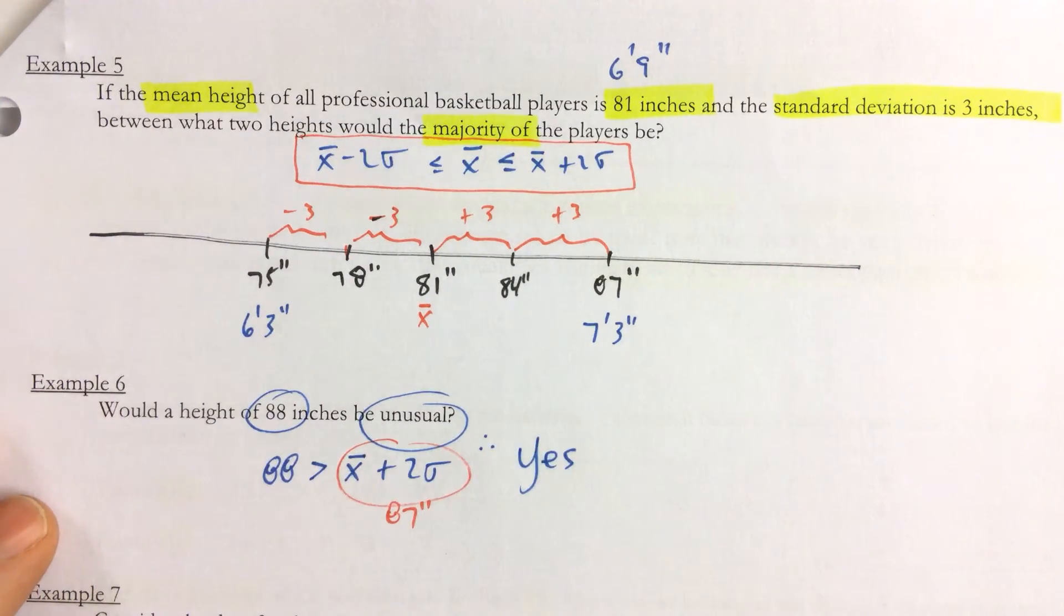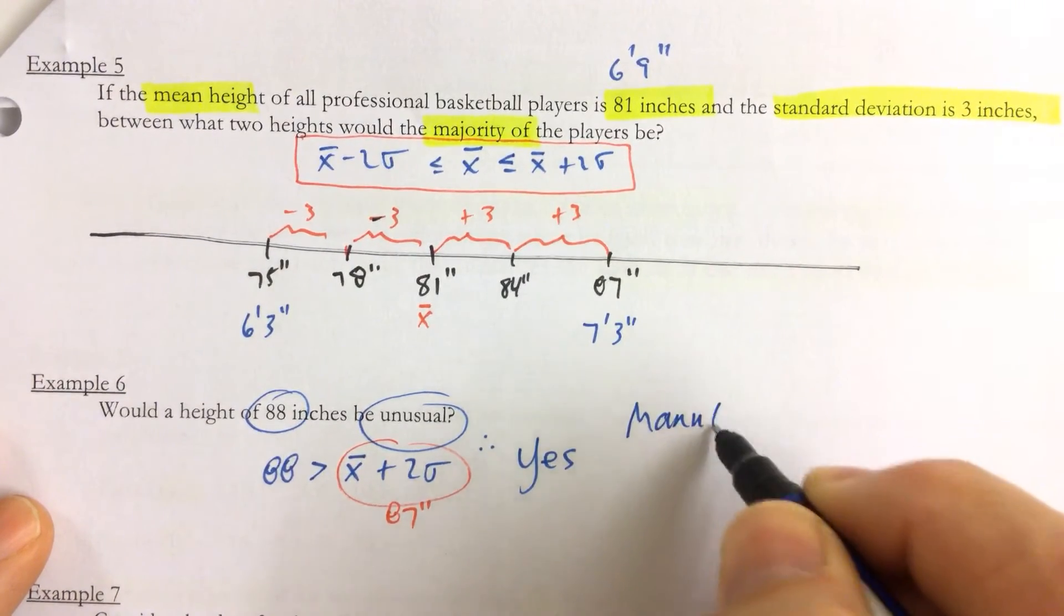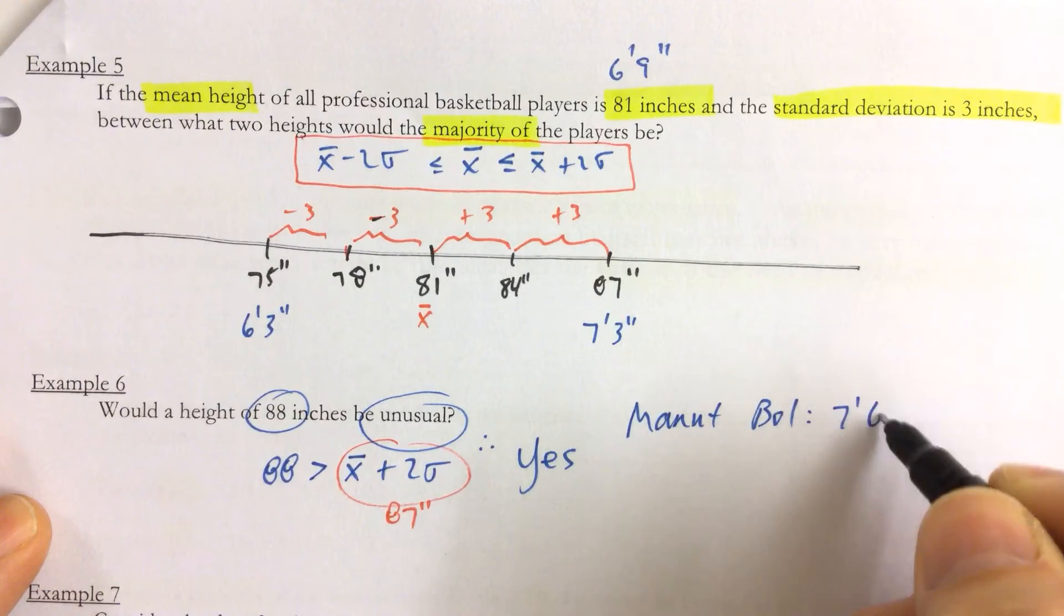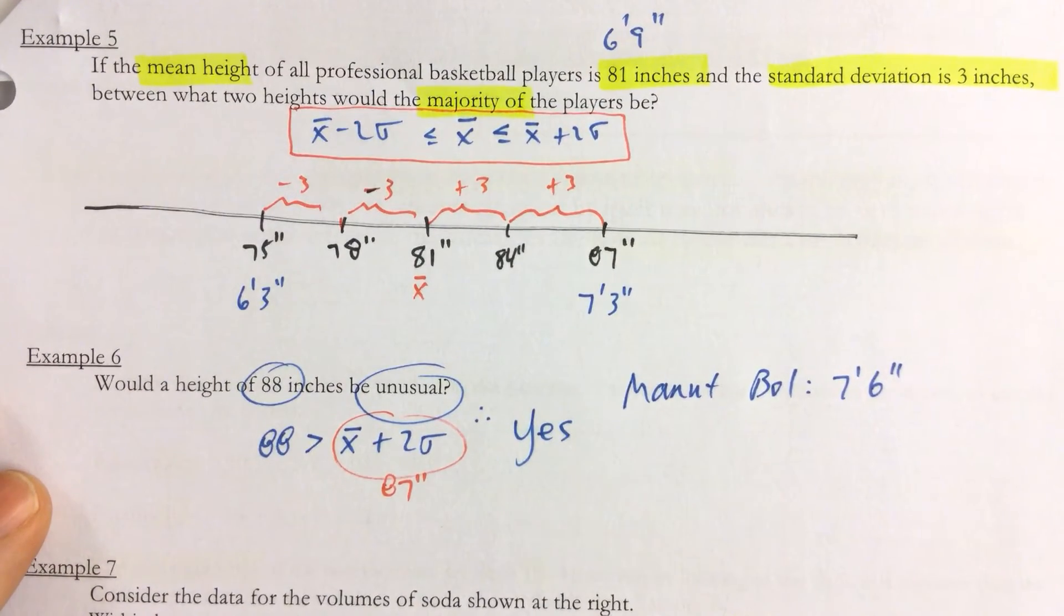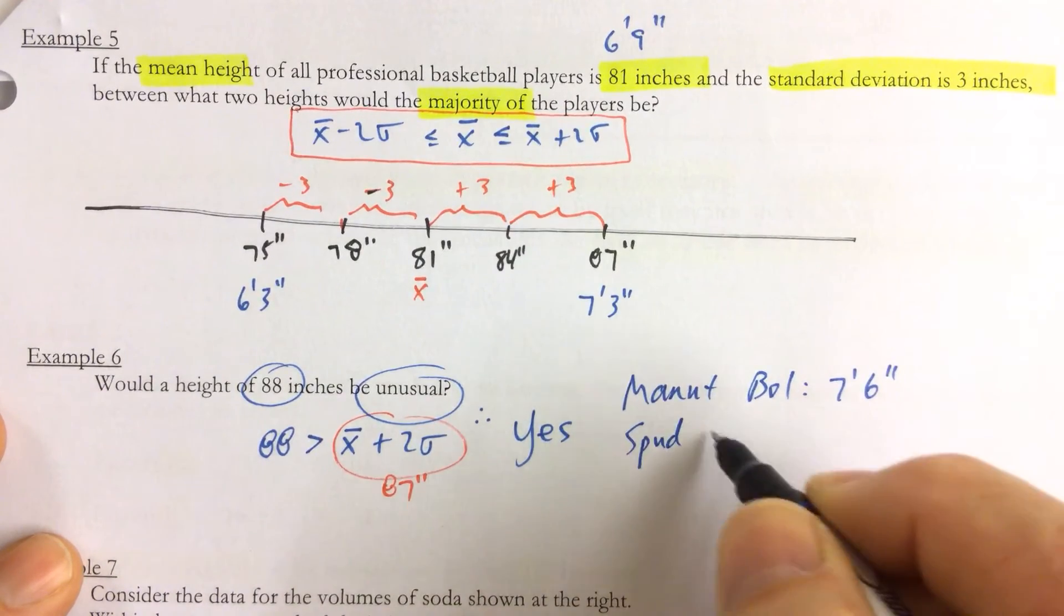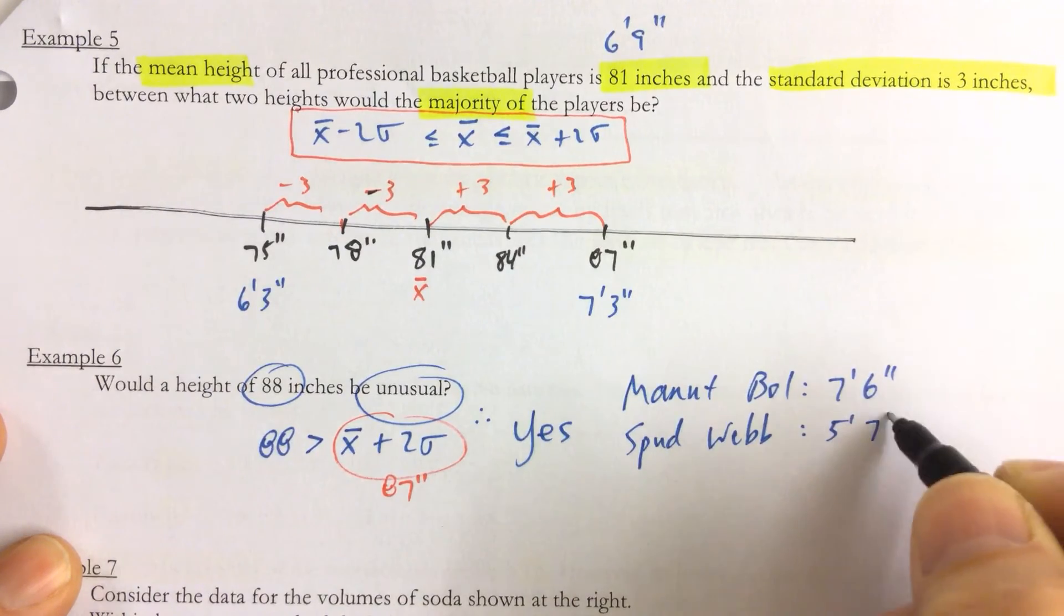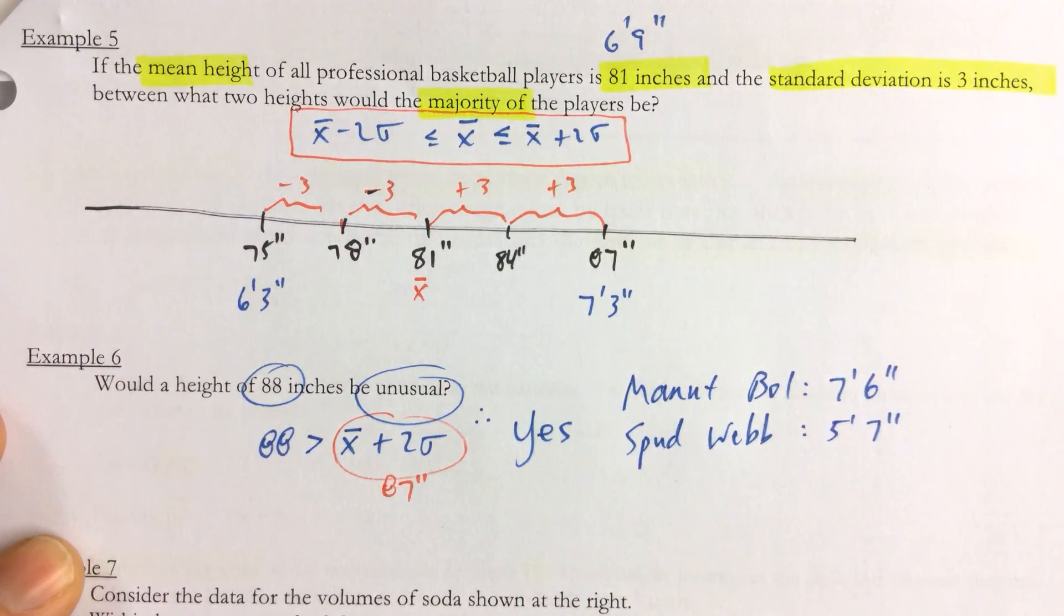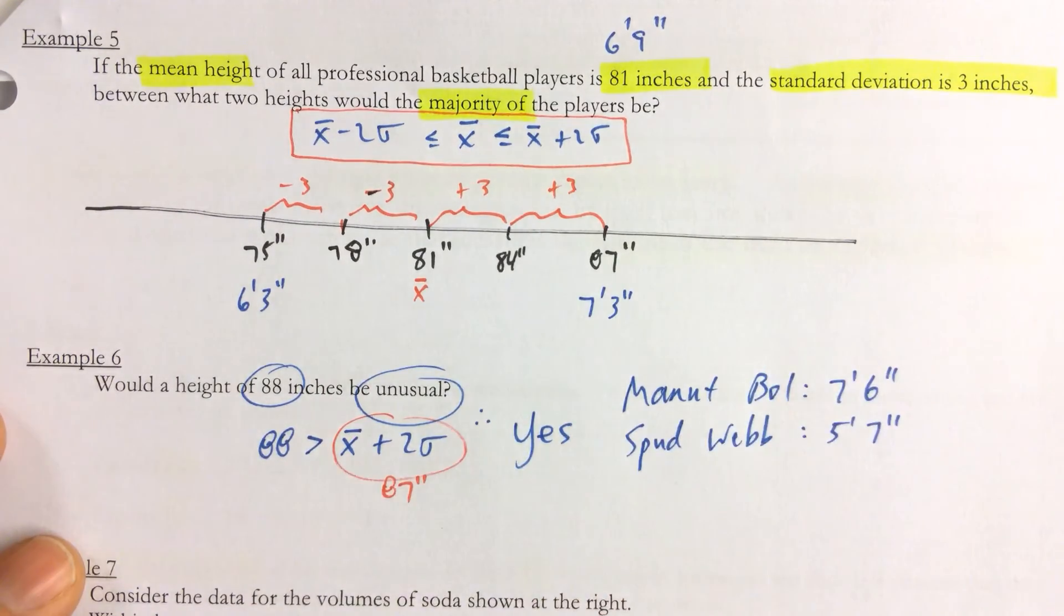And there were two NBA players that come to mind. One guy, his name was Manute Bol. Manute Bol was seven feet six inches tall, one of the tallest guys. I think maybe Yao Ming was seven seven. And then we had a guy named Spud Webb, who could also dunk a basketball, and he was five feet seven inches tall. So these two clearly were outliers, and they were unusually either short or tall compared to other NBA players.